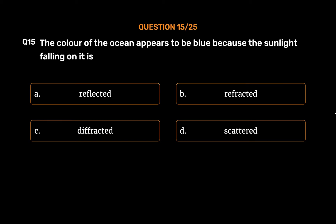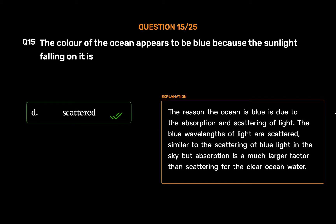The correct answer is Option D: Scattered. The reason the ocean is blue is due to the absorption and scattering of light. The blue wavelengths of light are scattered, similar to the scattering of blue light in the sky, but absorption is a much larger factor than scattering for the clear ocean water.